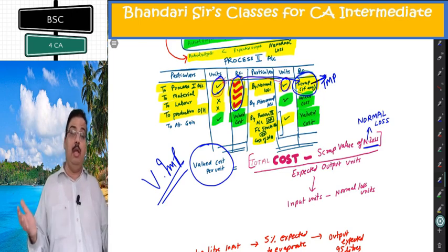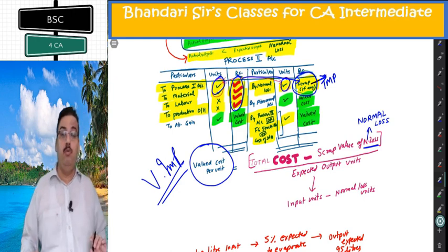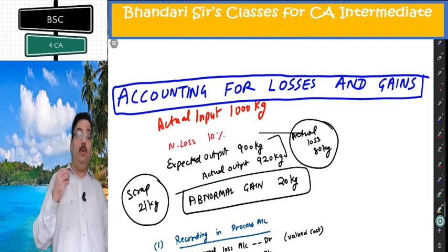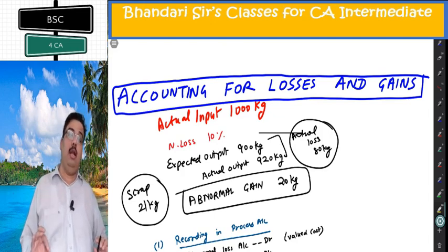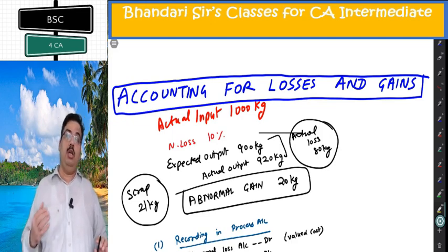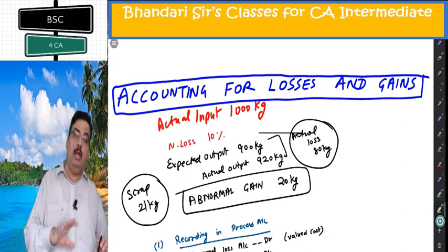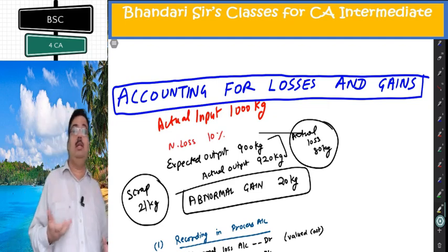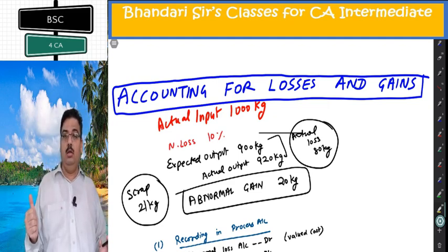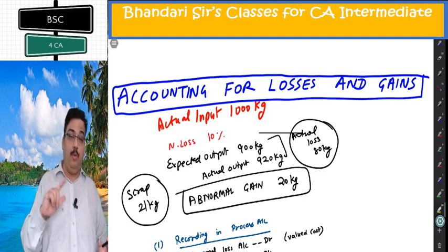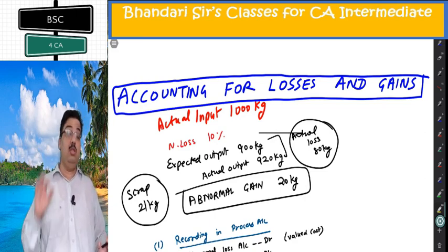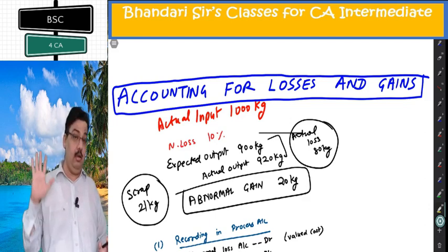This process account you will make many times in this chapter, so it is very important to follow the same format. Next we discuss accounting for losses and gains — all the journal entries and ledger accounts related to abnormal loss, abnormal gain, and normal loss. I start with abnormal gain because the entries related to it are the most important and difficult.